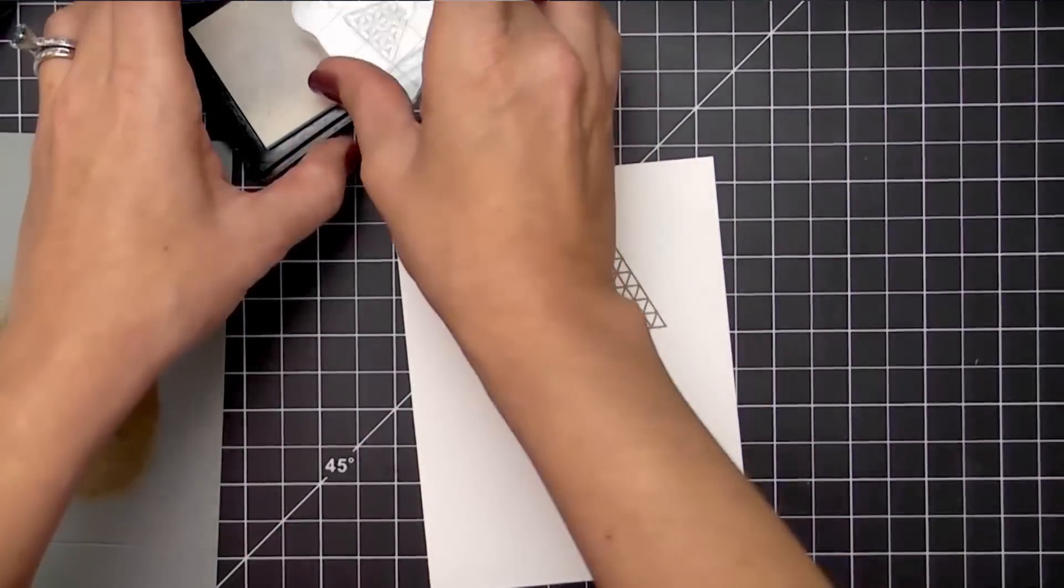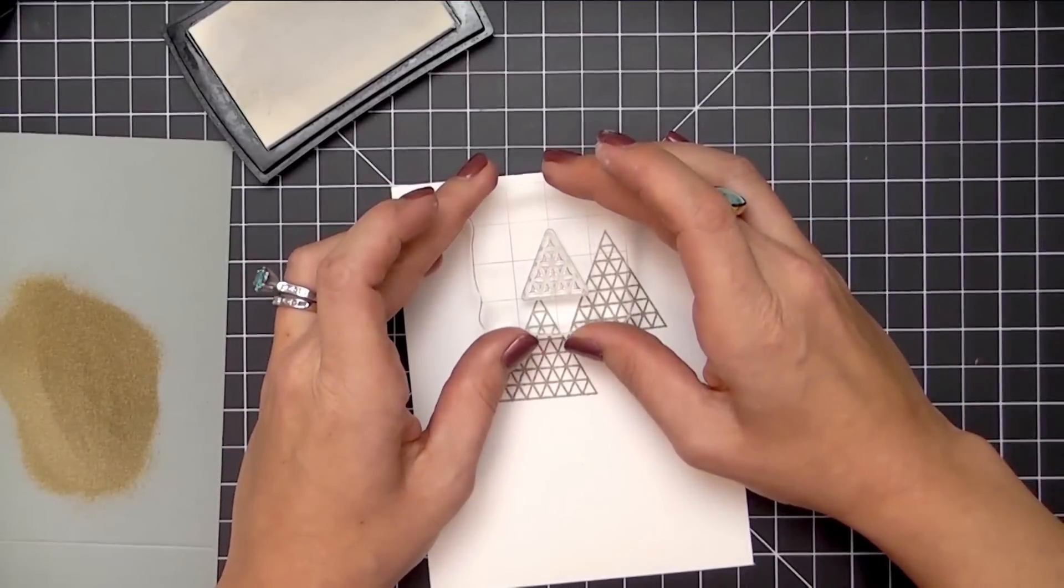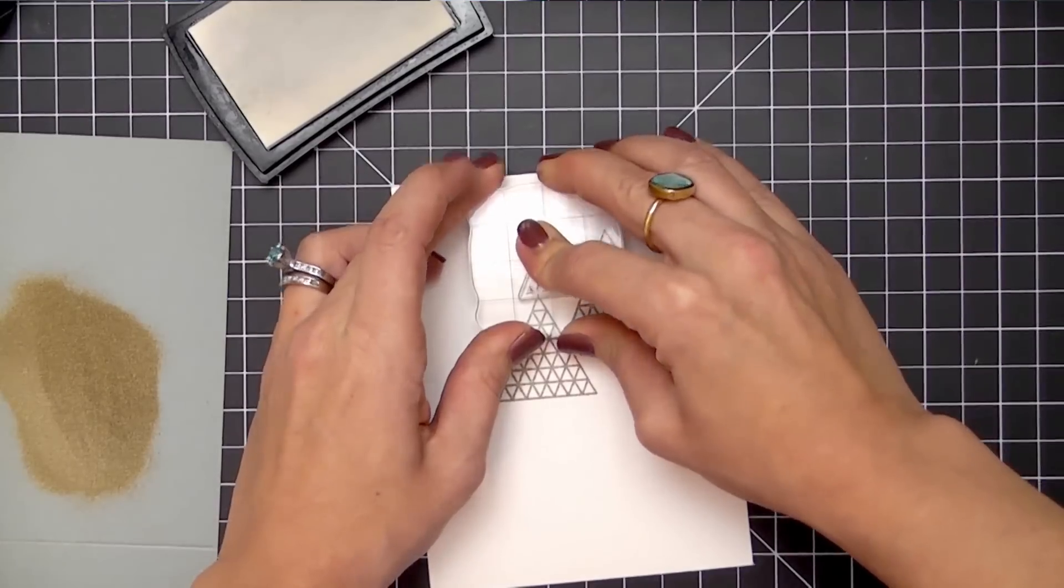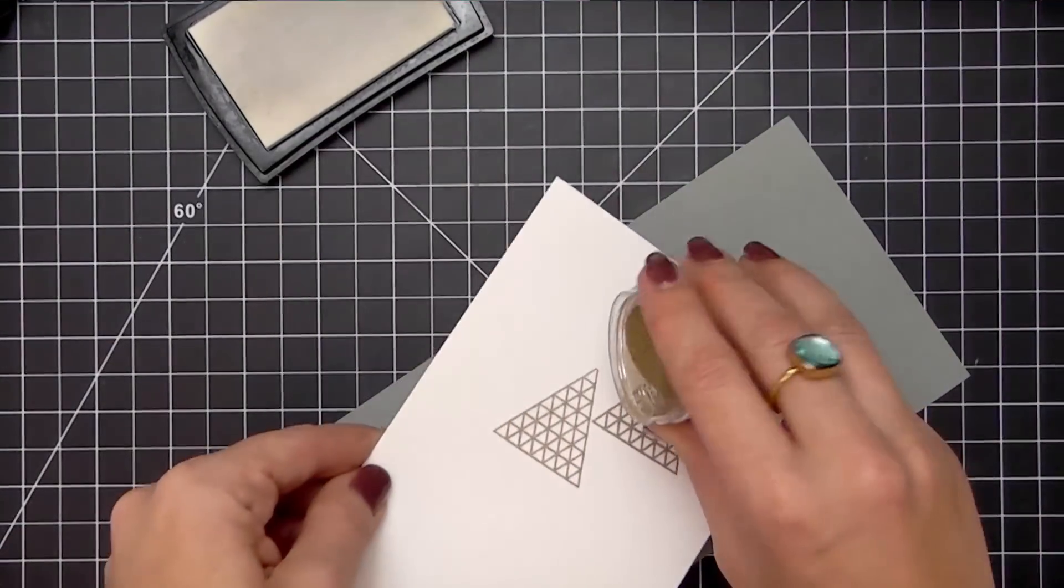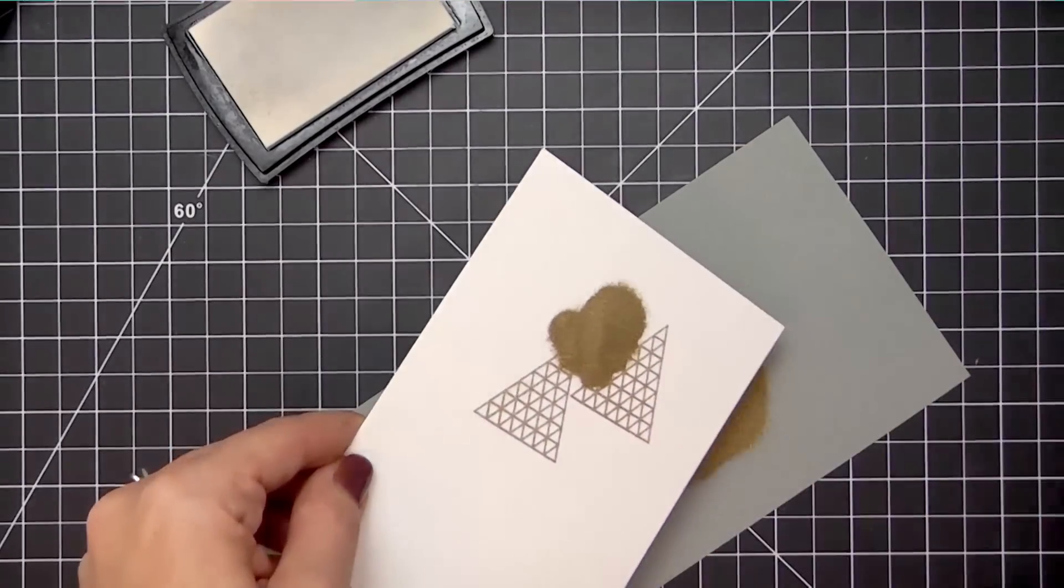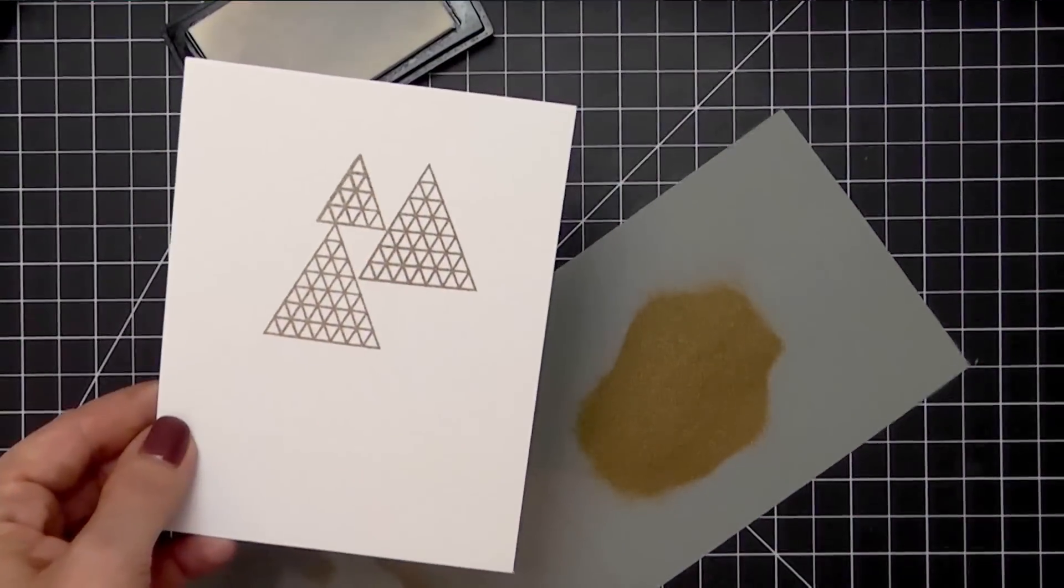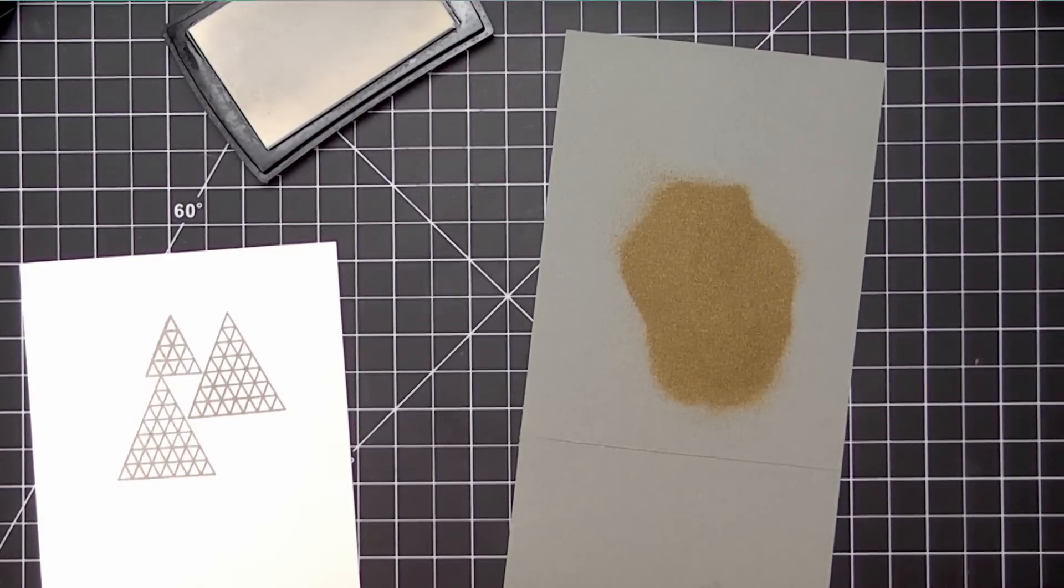Each time I'm going to apply my powder, shake off the excess, and then stamp my image. Here I'm choosing to use the medium little pyramid image, and I'm lining it up so that the horizontal lines do meet up with each other.